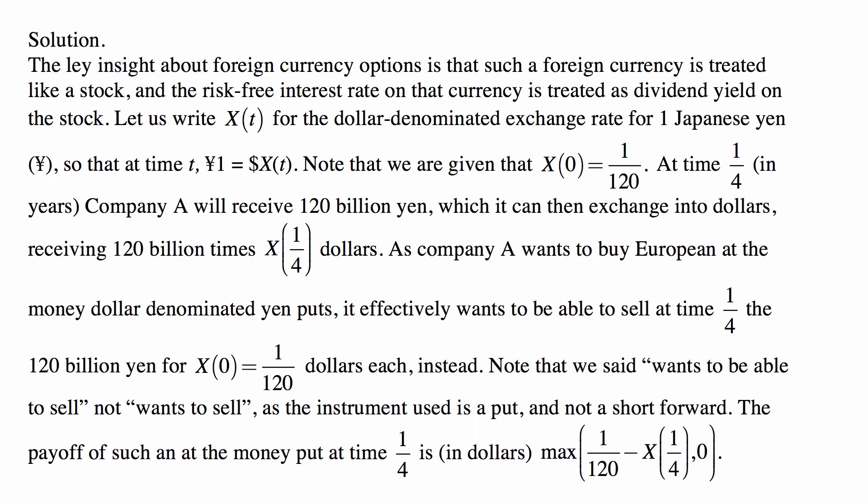Let us write X(t) for the dollar-denominated exchange rate for one Japanese Yen, so that at time t, one Yen equals X(t) dollars. We are given that X(0) = 1/120 — one Yen is 1/120 of a dollar, a very small number. At time t = 1/4 years, Company A will receive 120 billion Yen, which it can exchange into dollars, receiving 120 billion × X(1/4) dollars.